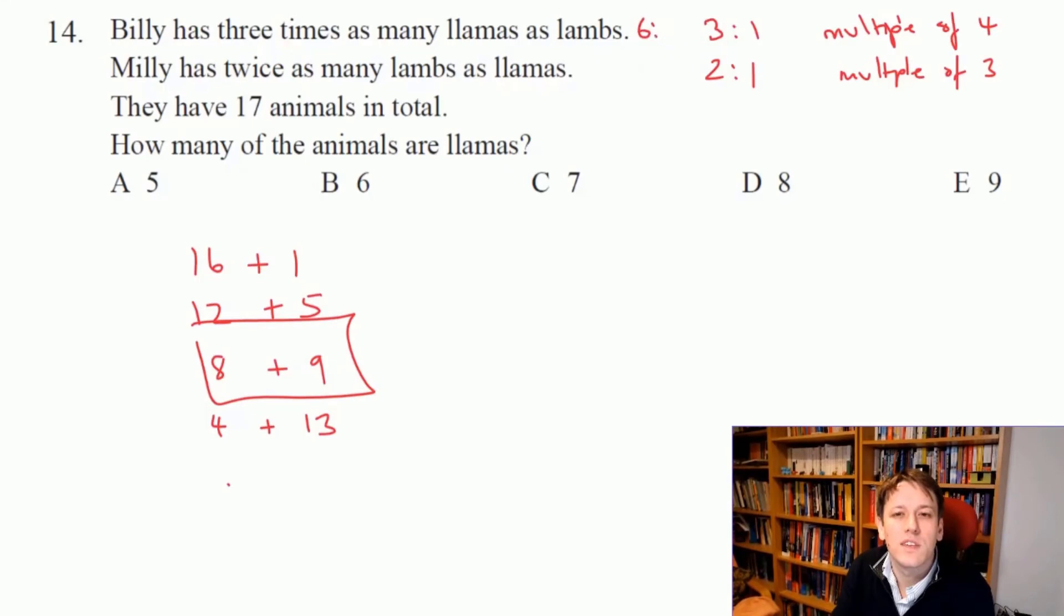That's going to be 6 to 3. Now I've just got to be really careful which way around they are. Billy has three times as many llamas as lambs, so he's got more llamas, so the llamas are the 6.